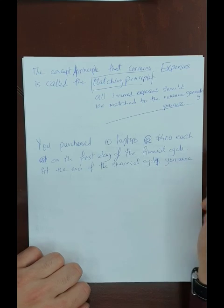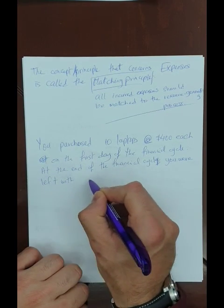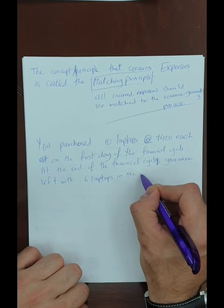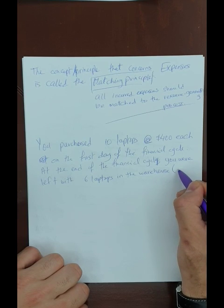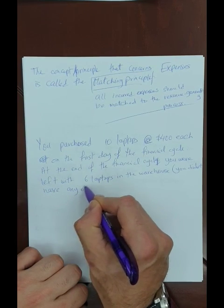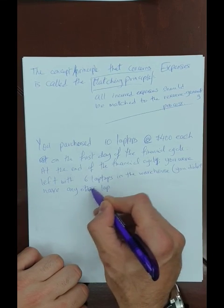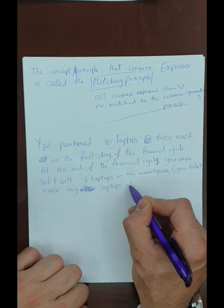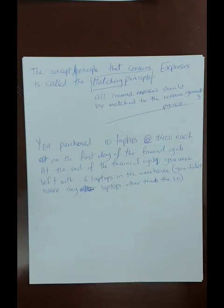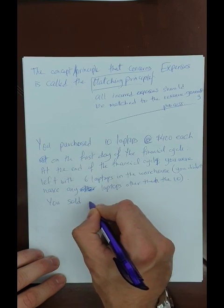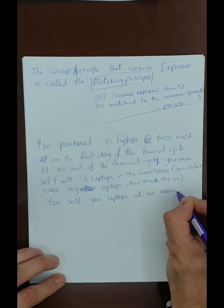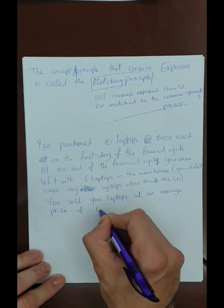At the end of the financial cycle, you were left with six laptops in the warehouse — meaning you sold four. You had no other laptops beyond the 10 purchased. You sold your laptops at an average price of $600 each. The question is: prepare an income statement — you have two options.